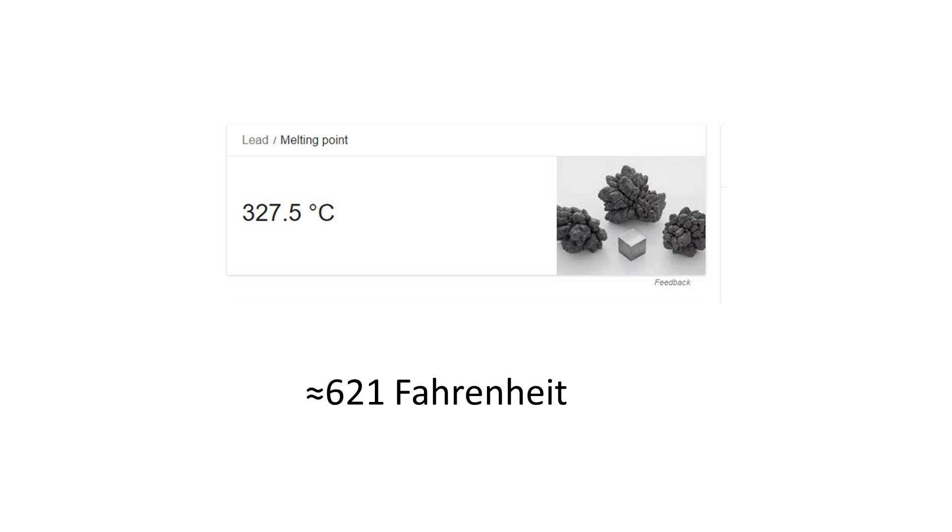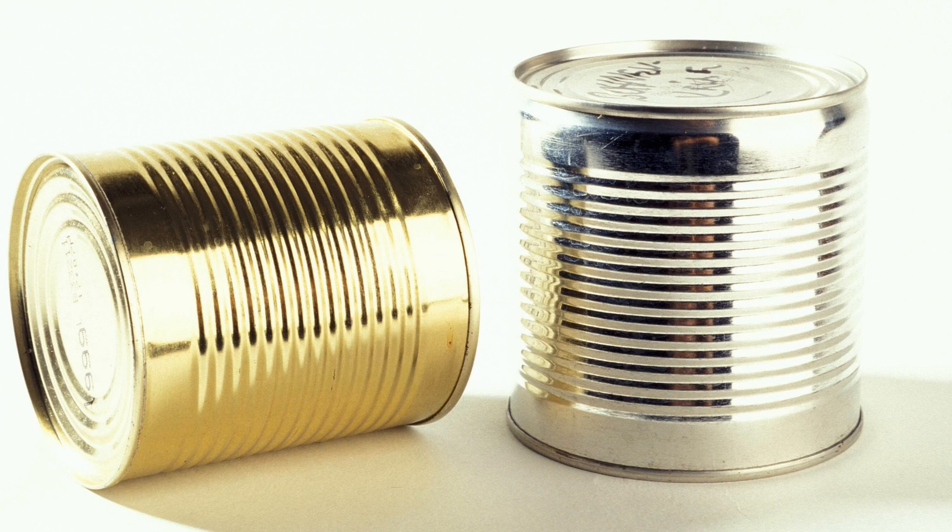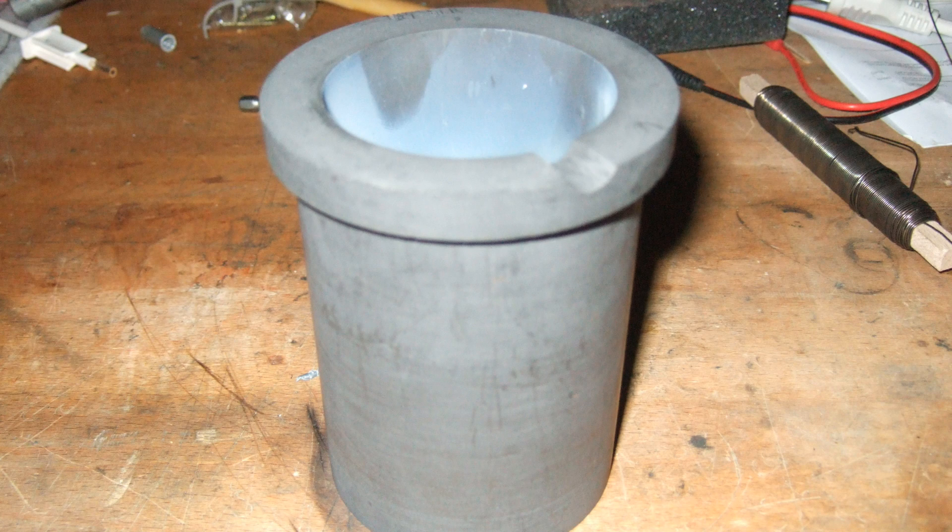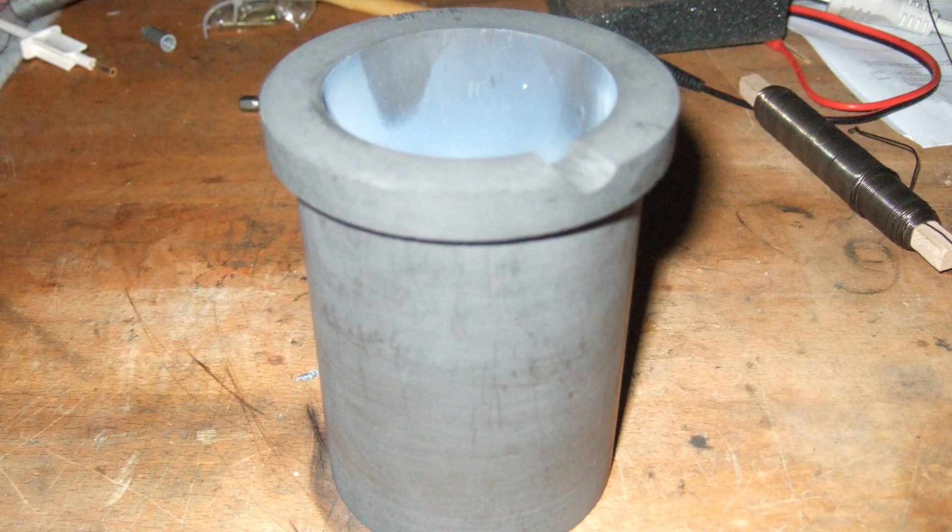Easier said than done. From a video from AVE, I knew that I needed a heat-resistant pot. You might say I could have used an old can made of iron, because iron does not melt at 320 degrees. But, being professional, I purchased a graphite crucible. I was also curious about this graphite material.